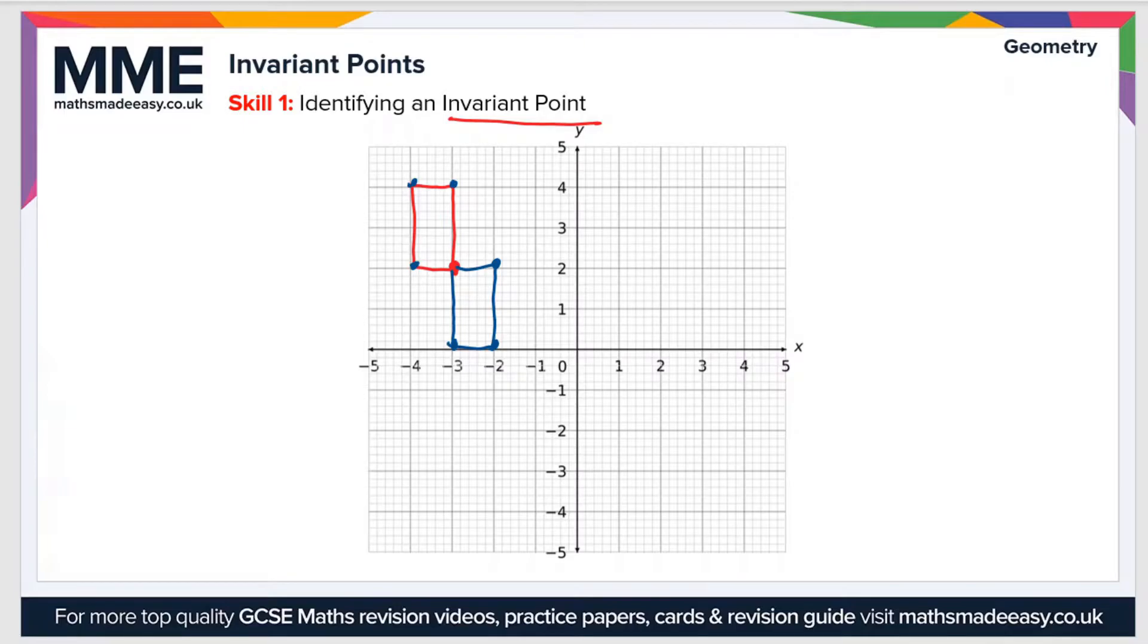But as you can see, this point here hasn't moved. So this bottom right corner of the shape has stayed where it is. That's because we used it as the center of rotation. So we can say that there's an invariant point at negative 3, 2.